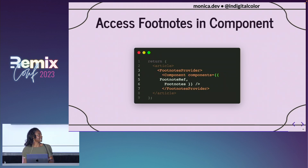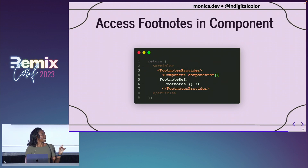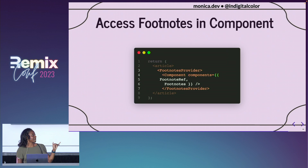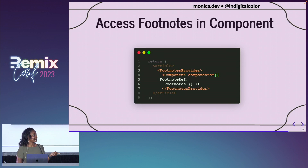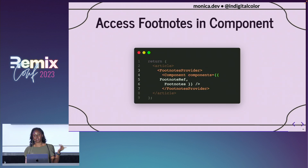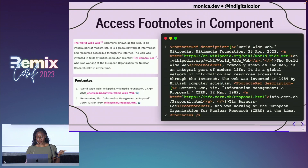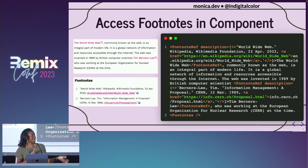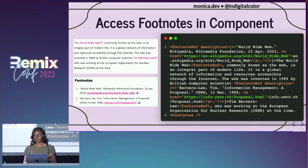In our use case, if we wanted every single MDX component to have access to the FootnotesProvider, we would wrap it globally. Otherwise, we can pass in the FootnotesProvider as a prop and wrap individual MDX files. We also need to make sure we're passing in the FootnoteRef and Footnotes so we can use those inside our file. If you don't want this to be global, there's also the option to directly import these components. The result is an MDX file with FootnoteRefs throughout, outputting a numbered footnotes section at the bottom without manual tracking.